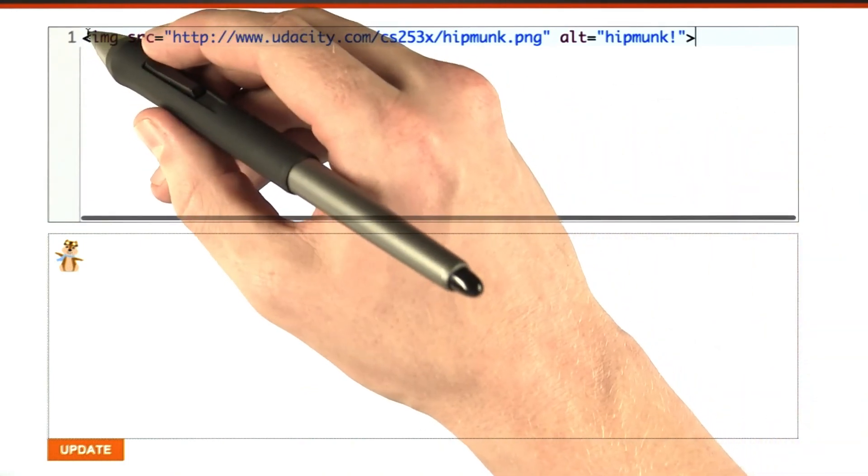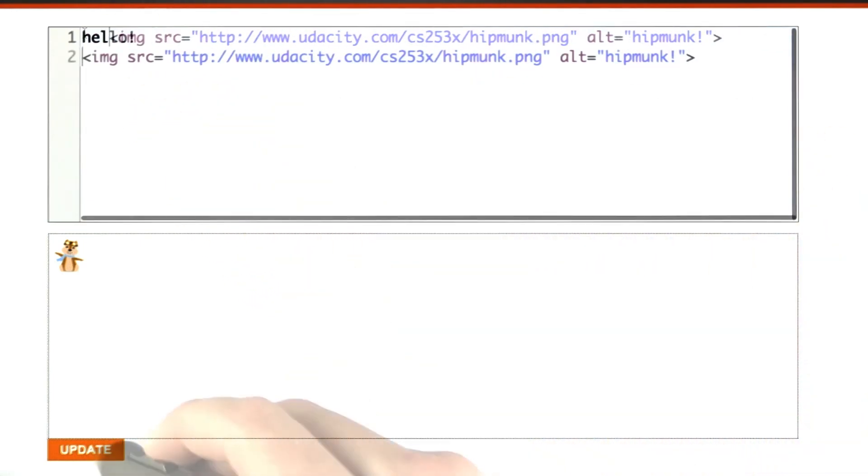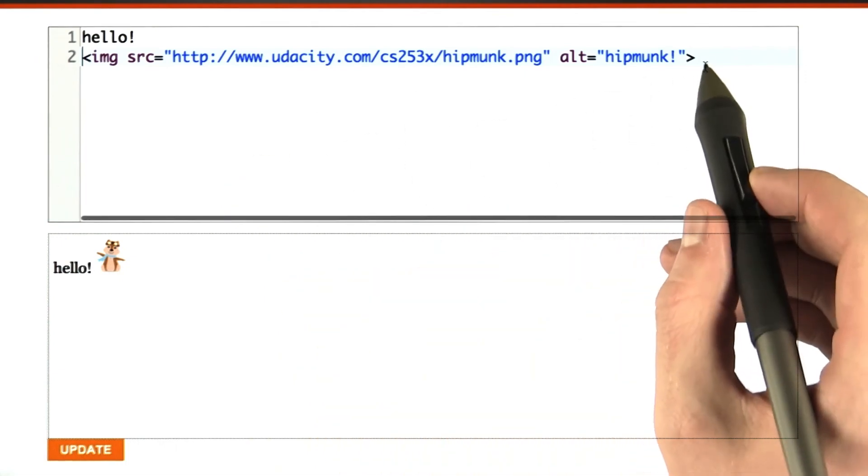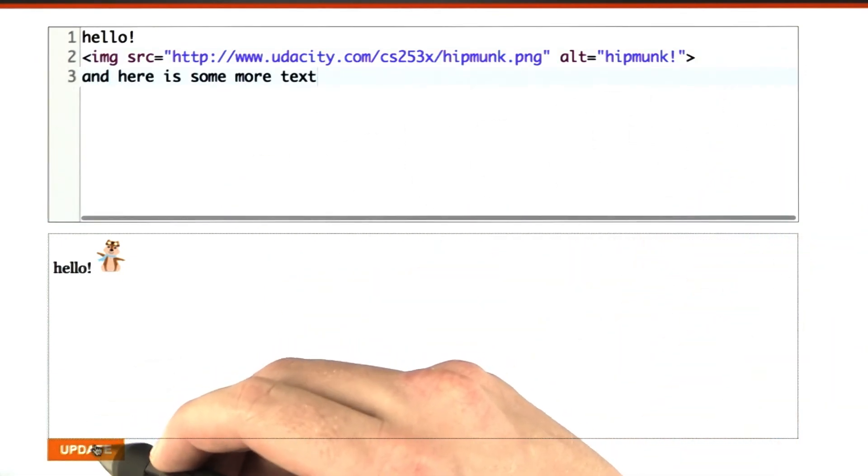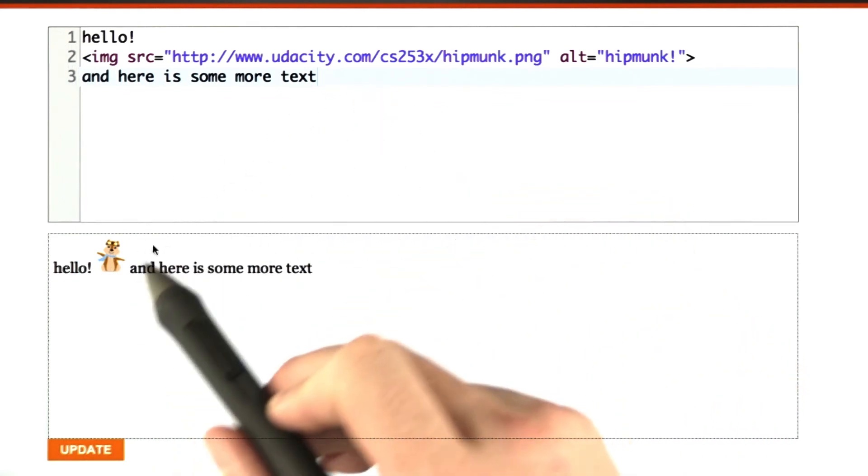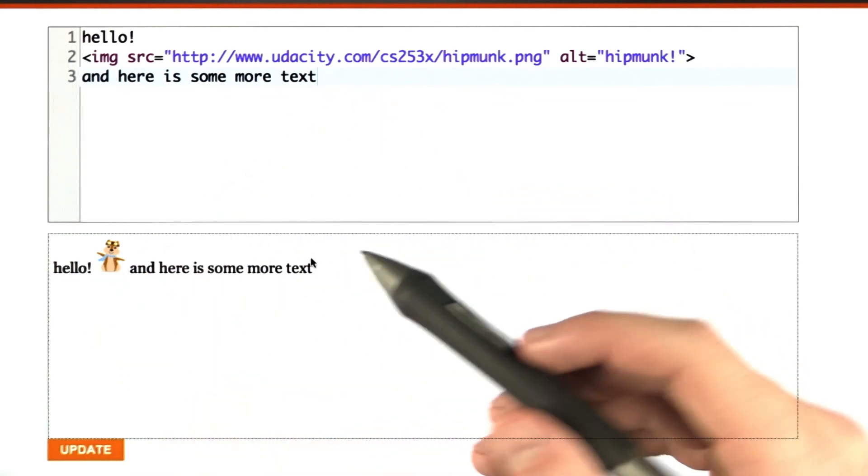Now, a couple other things we can do. I could put some text here. There's our text. Images just appear in line with text. Yeah, so a small image just appears right in the middle of other text.